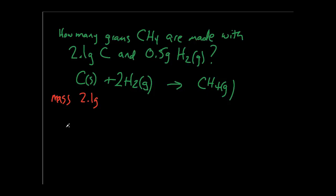So we have 2.1 grams of carbon, and we know the molar mass of carbon is 12 grams per mole. So with that, since mole is mass over molar mass, mole equals 0.175. For the mass of hydrogen it's given to us as 0.5 grams, we know the molar mass of diatomic hydrogen is 2 grams per mole. So the number of moles is going to be 0.25.